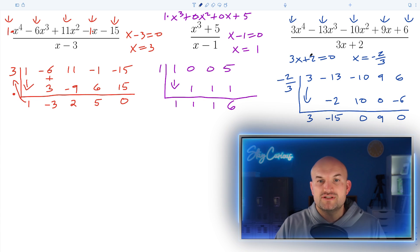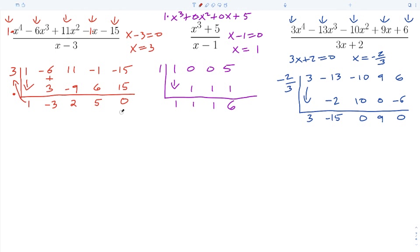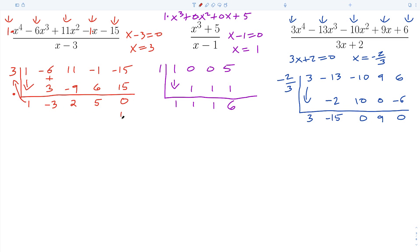The tough thing about synthetic division is that once students get used to the steps, they need to understand what the answer is actually giving them. The values we found are the coefficients of our quotient polynomial. Reading from right to left: the last value is the remainder, then the constant, then the coefficient of the linear term, the quadratic term, and the cubic term. Therefore, the quotient of the first example is x cubed minus three x squared plus two x plus five.